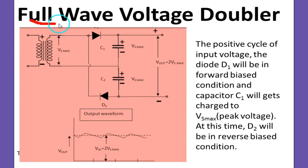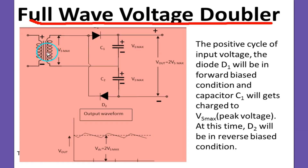Now we will discuss the full wave voltage doubler. The circuit has a transformer with primary winding, iron core, and secondary winding. The peak voltage is Vs maximum across the secondary. We are using two diodes — D1 and D2 — and two capacitors C1 and C2. One terminal is connected across and we get the output across two points.